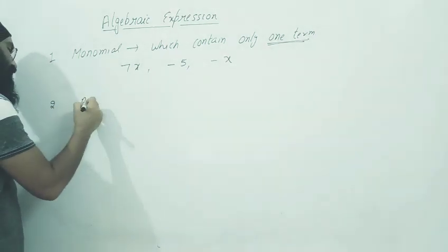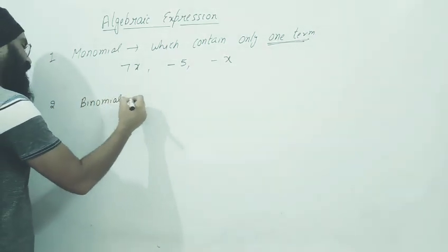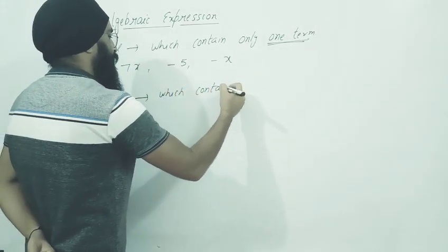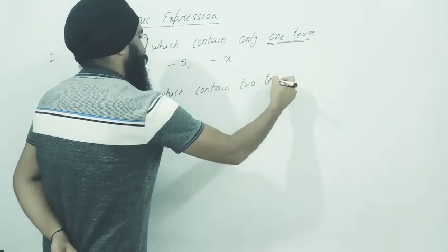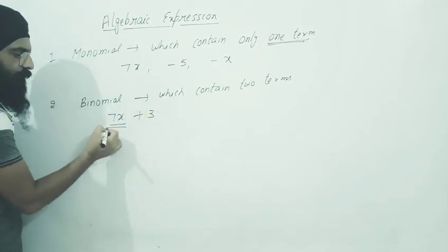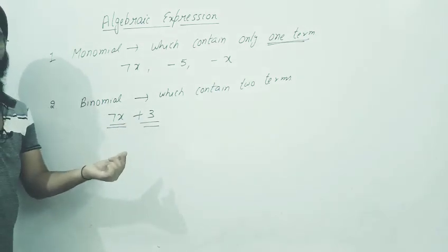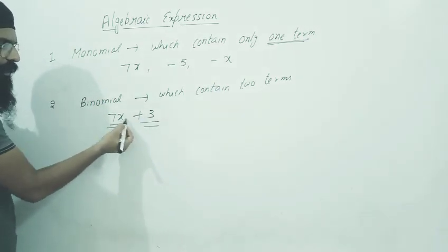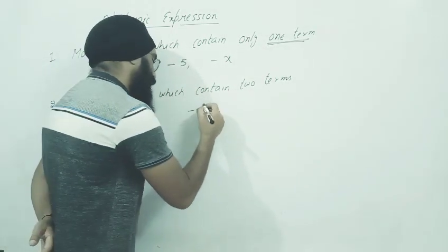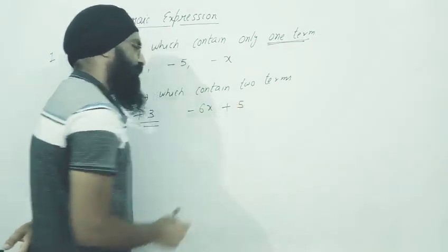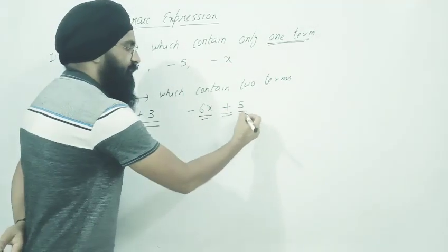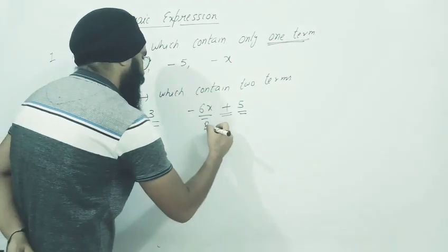Next we have binomial. Binomial is which contains two terms - in which there are two terms. Like 7x plus 3. That is term 1, that is term 2. That is called binomial.